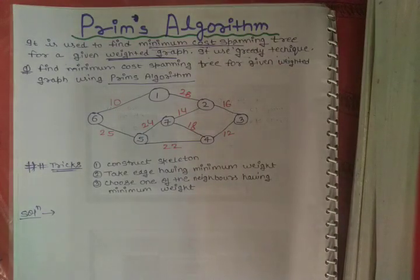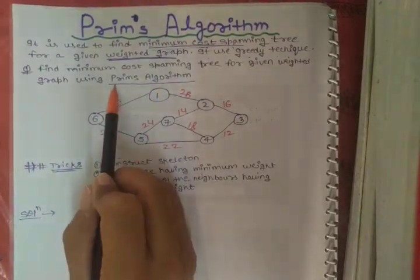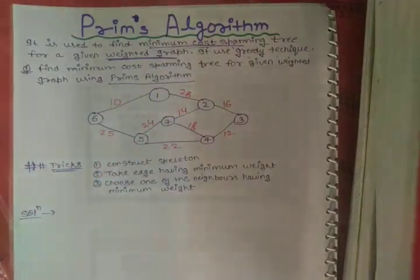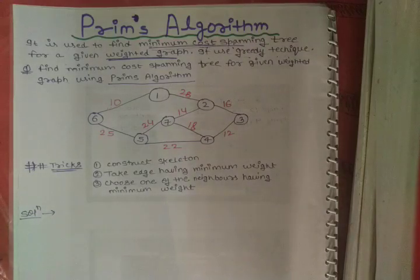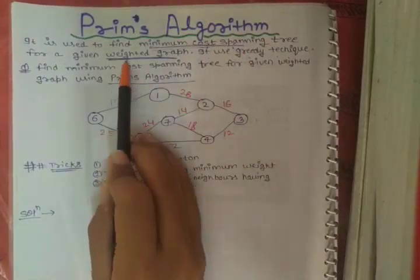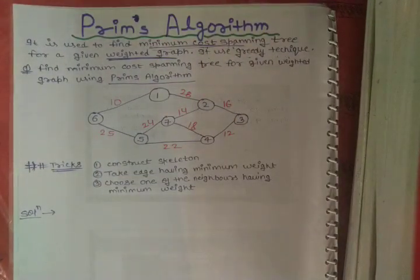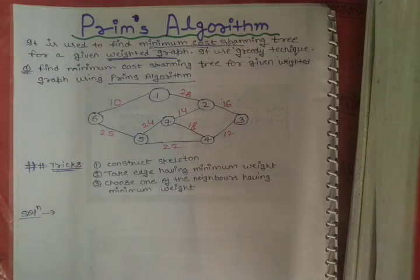In exams, they will mention a keyword specifying whether you have to use Prim's algorithm or Kruskal's algorithm. If they do not mention that, then you can use any of the algorithms to find the minimum cost spanning tree for a weighted graph. We will discuss Prim's algorithm first, then Kruskal's algorithm after that.